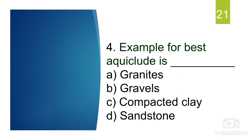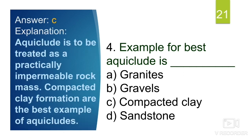The fourth question is: what is the best example of an aquiclude — granite, gravels, compacted clays, or sandstones? Aquiclude is treated as a practically impermeable rock mass: it is porous but not permeable. It can contain water but cannot transmit a sufficient amount of it. Compacted clay formations are the best examples of aquicludes. As a memory trick: both 'aquiclude' and 'clays' contain the letter C. Option C is the correct answer.